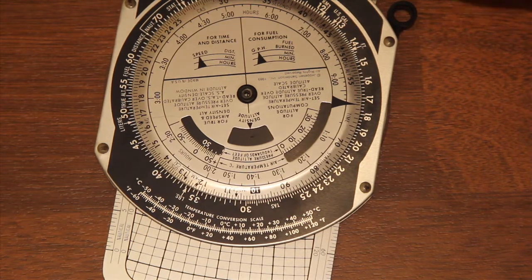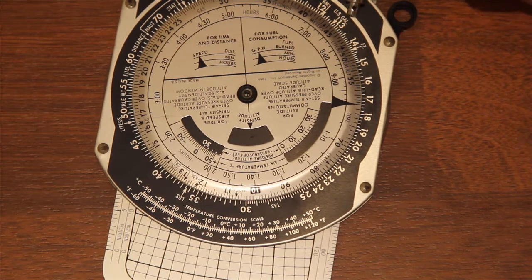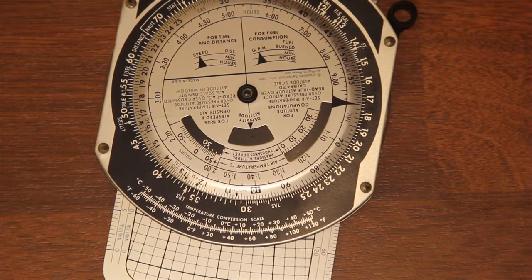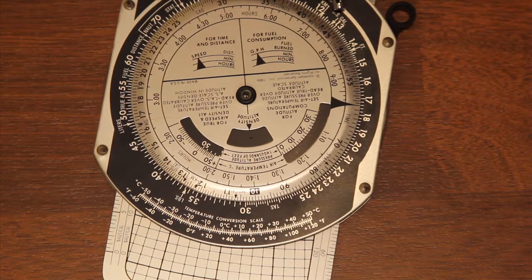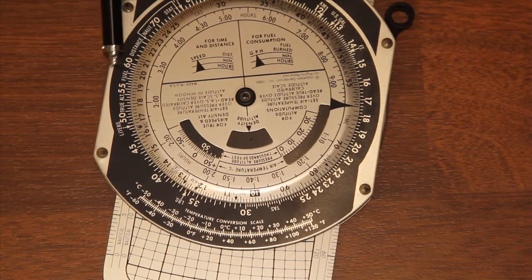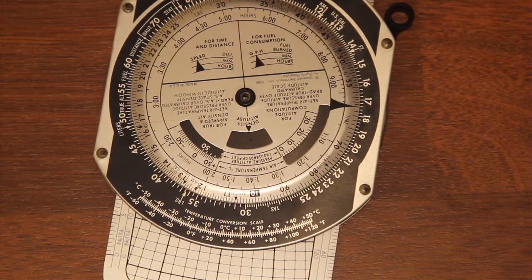So in this case I've got the machine set up with 13 on the outer scale and 45 on the inner scale. If you read around on any of the other scales around here you will get that exact same ratio.